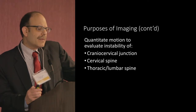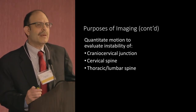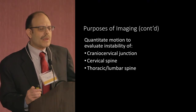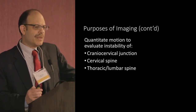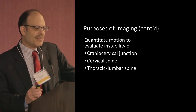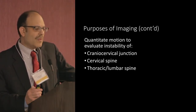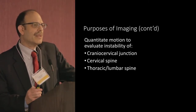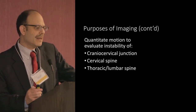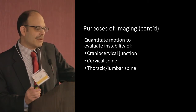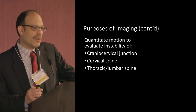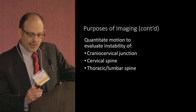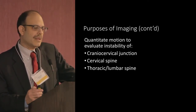The issue with imaging is that it's hoped to be an objective sort of measurement, which it's never perfectly objective. We look at a number of areas for abnormal motion. We can look at the head on top of the spine, the cervical spine for abnormal motion, and the lower spine — the thorax and the lumbar spine.